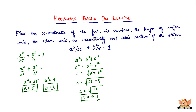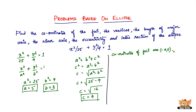Let's start with the coordinates of the foci. For this form of ellipse, the foci are at (−C, 0) and (C, 0). Since C = 4, the coordinates of the foci are (−4, 0) and (4, 0).